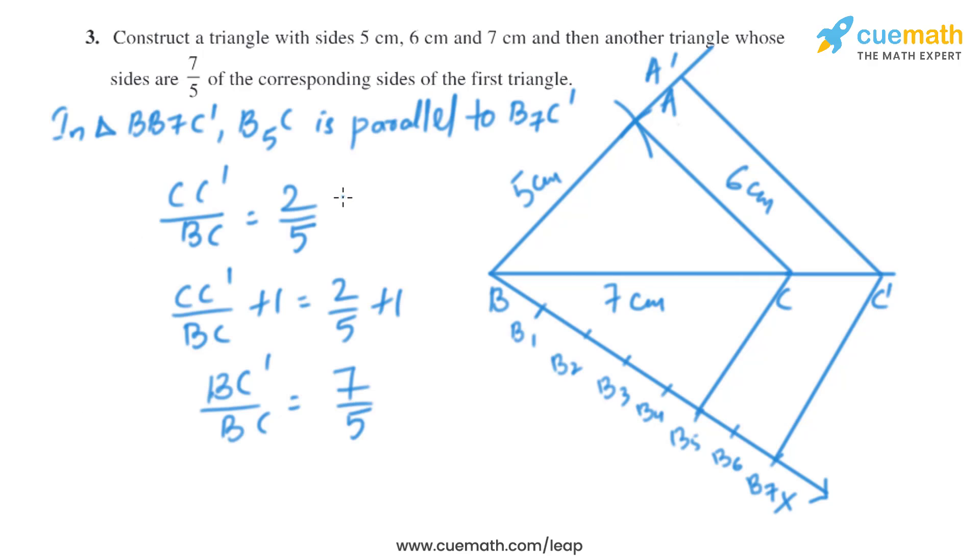Now let's prove this construction. In triangle BB7C dash, B5C is parallel to B7C dash, so using the basic proportionality theorem we will get CC dash by BC equals 2 by 5. If we add 1 to both sides we'll get BC dash by BC equals 7 by 5.